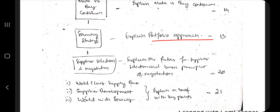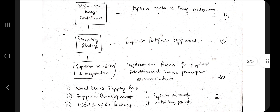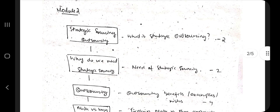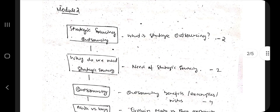After that we have supplier selection and negotiation, then three topics: world class supply base, supplier development, and worldwide sourcing. We'll be discussing each of these topics — the key points you need to keep in mind, what diagrams are involved, and how to remember those things.